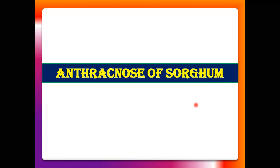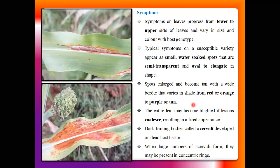First of all, we discuss the anthracnose disease of Sorghum. This is the most important and severe disease seen in Andhra Pradesh, Delhi, Madhya Pradesh, Maharashtra, Tamil Nadu, Uttar Pradesh, and Karnataka. This anthracnose disease is the most common disease seen in every variety of sorghum grown in India.